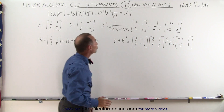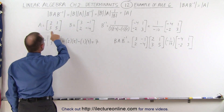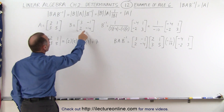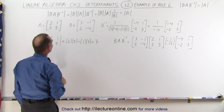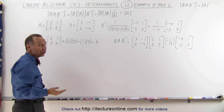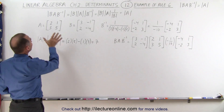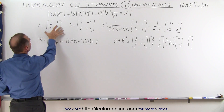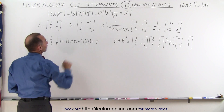Here we have the two matrices. We have matrix A and we have matrix B. They're both 2 by 2 matrices, and we already saw in previous videos that if we took the determinant of matrix A, we simply get 7.